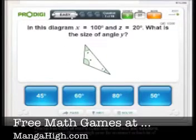So here we are at the diagram. X equals 100, Z equals 20, so we know that a triangle has 180 degrees, therefore that must be 60.